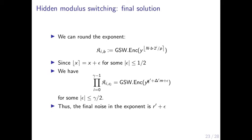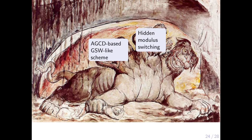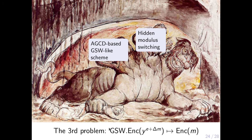This time it is secure because c' is only produced in the exponent of y — it's encrypted — and everything is well defined because we are only using integers. With this, we solved the first two problems: we have a GSW-like scheme that works with polynomials, and we solved the problem related to p.